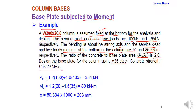With all input data available, we can start solving. Pu = 1.2(dead load) + 1.6(live load) = 1.2(100) + 1.6(165) = 384 kN. Mu = 1.2(20) + 1.6(35) = 80 kN·m.